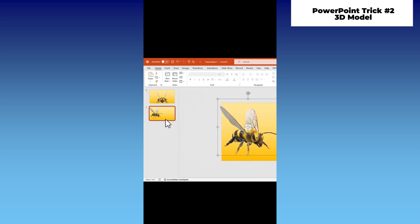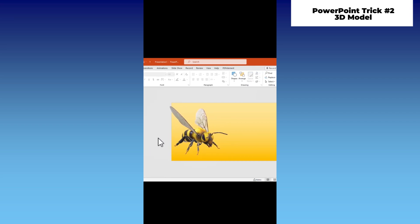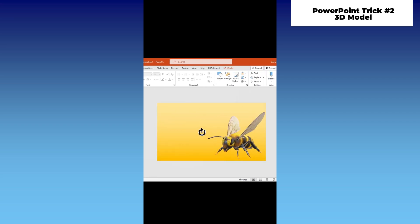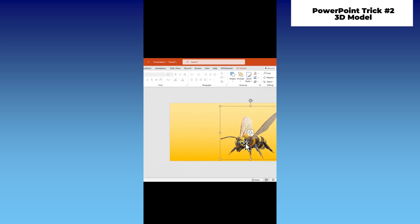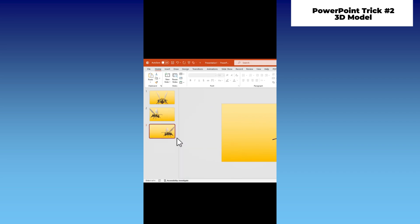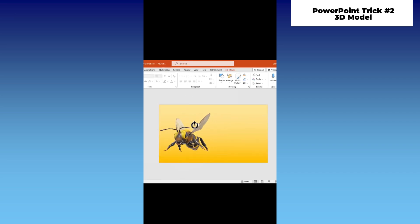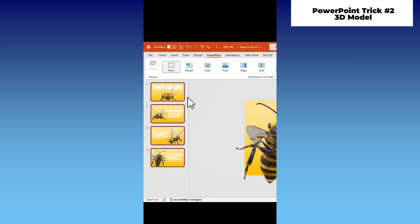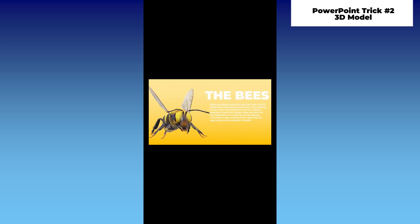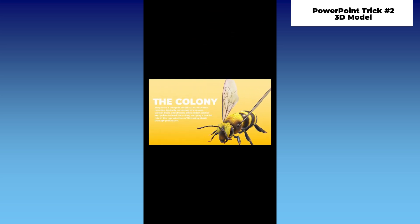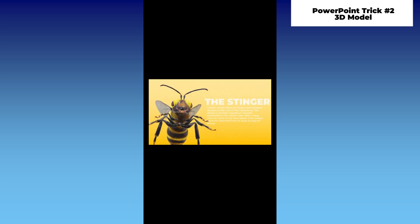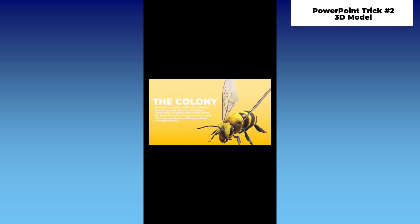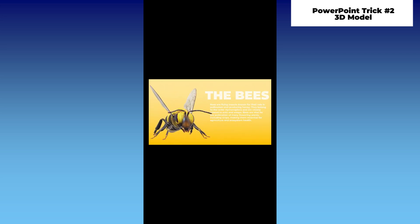Just trust me. Duplicate it again and reposition and rotate the angle once more. Now let's duplicate it for the last time and reposition it again here. Then you can add your text or design. Lastly, apply the morph transition to all slides. Boom! You've got yourself an upgraded PowerPoint presentation so you won't settle for boring ones. Follow for more cool PowerPoint tutorials.